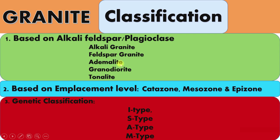If granite shows 35% alkali feldspar and 65% plagioclase, that rock is called granodiorite. If alkali feldspar is between 0–10% and plagioclase is 90–100%, then that rock is called tonalite. These are the varieties and types of granites.